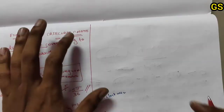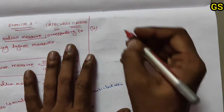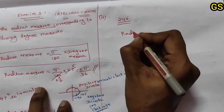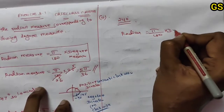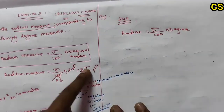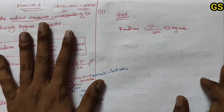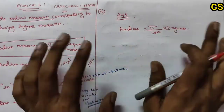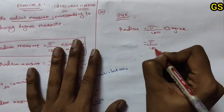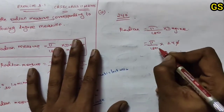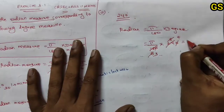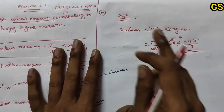The next, third subdivision: 240 degrees. Formula: radian equals pi by 180 into degree. When we apply pi by 180 into 240, using the 3 table — 6 threes are 18, 8 threes are 24 — we cancel and get 4 pi by 3. So 240 degrees equals 4 pi by 3.